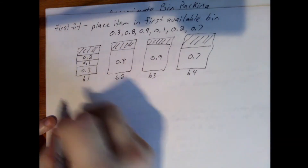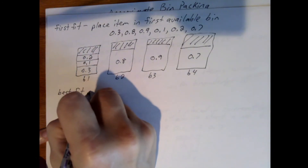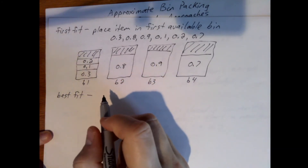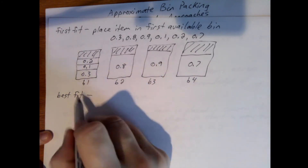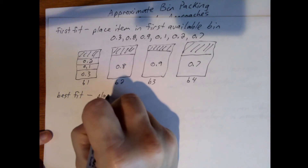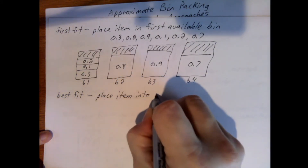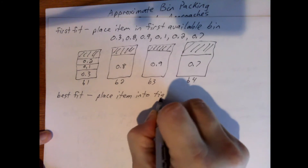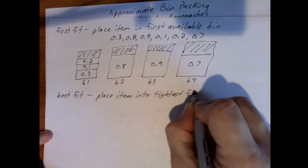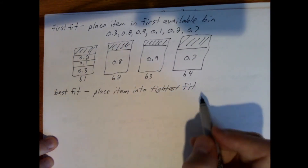Now let's look at another algorithm called Best Fit. In this case, we place the item with the tightest fit possible. The way to think about it is that we're trying to minimize the wasted space in the bin we choose.